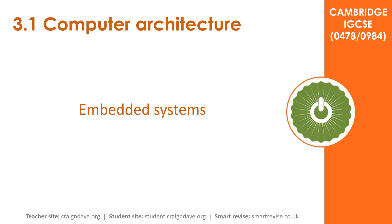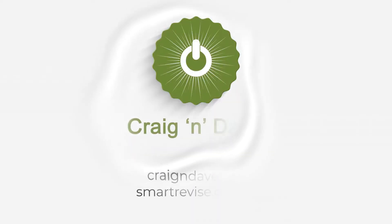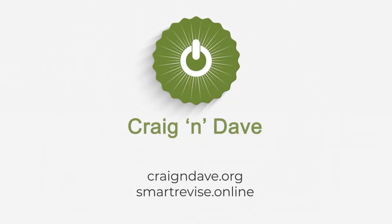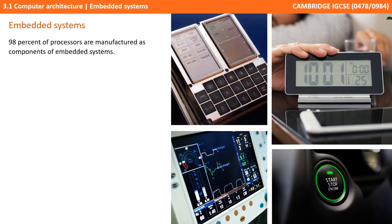In this video, we take a look at embedded systems. An embedded system is a computer system with a dedicated function within a larger mechanical and electrical system. 98% of all processors are manufactured as components of embedded systems.